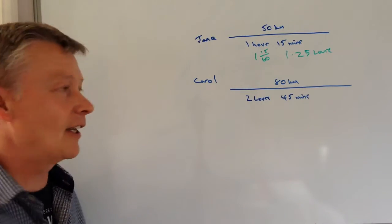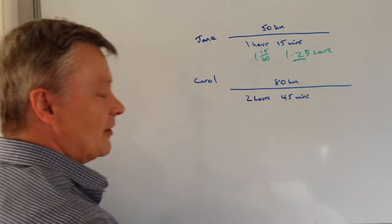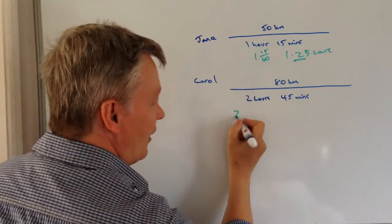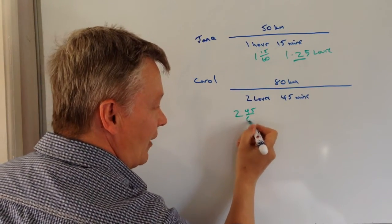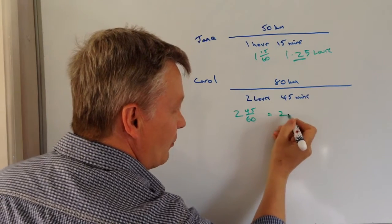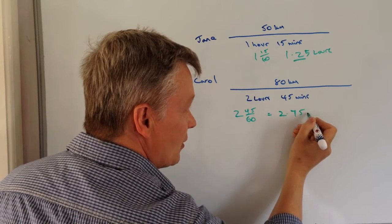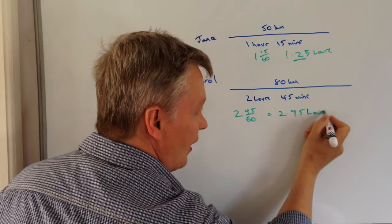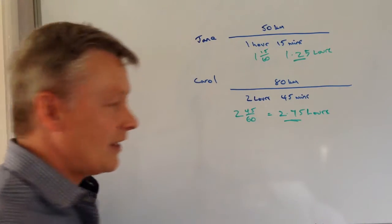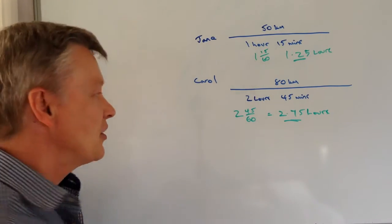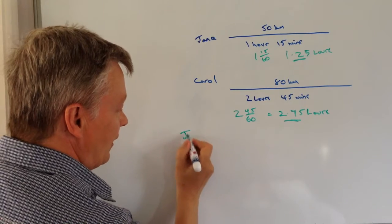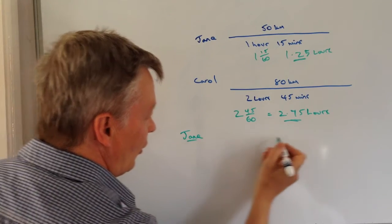Okay, so again, 2 hours and 45 out of 60 gives me 2.75 hours. That's the information we're going to use to work out one for Jane and one for Carol.